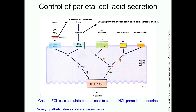Atropine, for example, acts to block the action of acetylcholine, while cimetidine or Tagamet are antihistamines that block the ability of histamine to activate the H2 receptor. Another target is the hydrogen-potassium ATPase itself, which can be blocked by omeprazole (Prilosec). Use of these drugs can have side effects, including feedback effects on the cells that produce stimulating factors, causing hyperplasia of parietal cells and effects on the cells that produce gastrin. In some cases, this hyperactivation can lead to cancers.